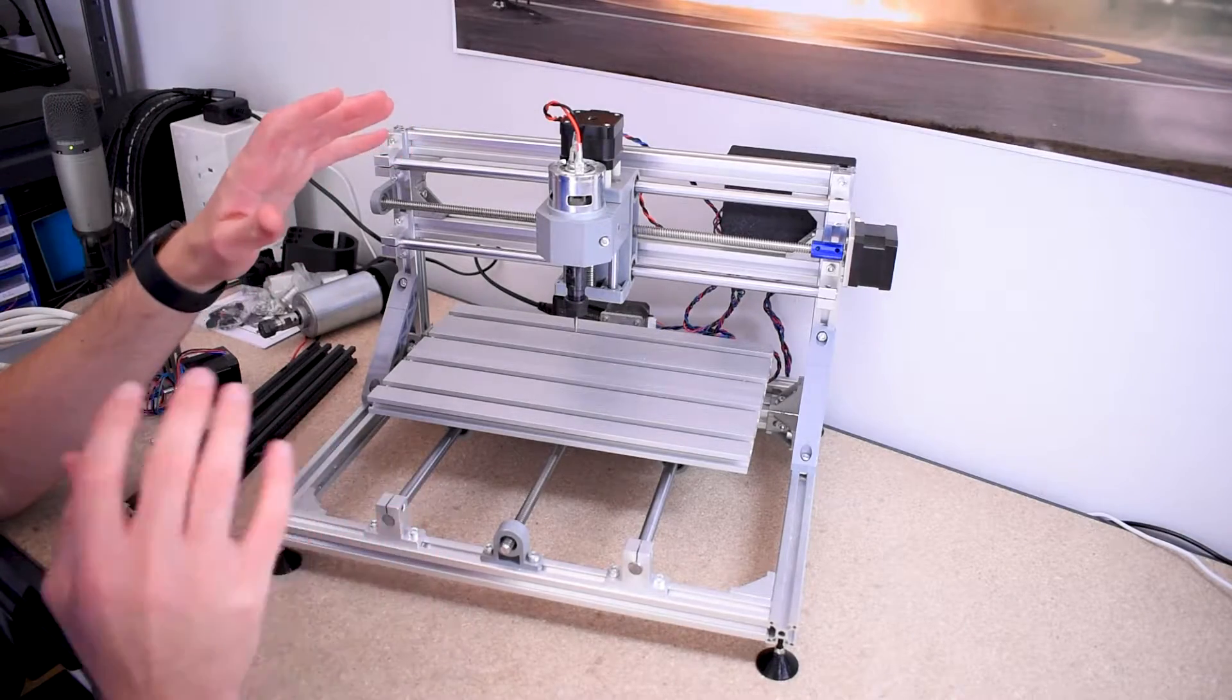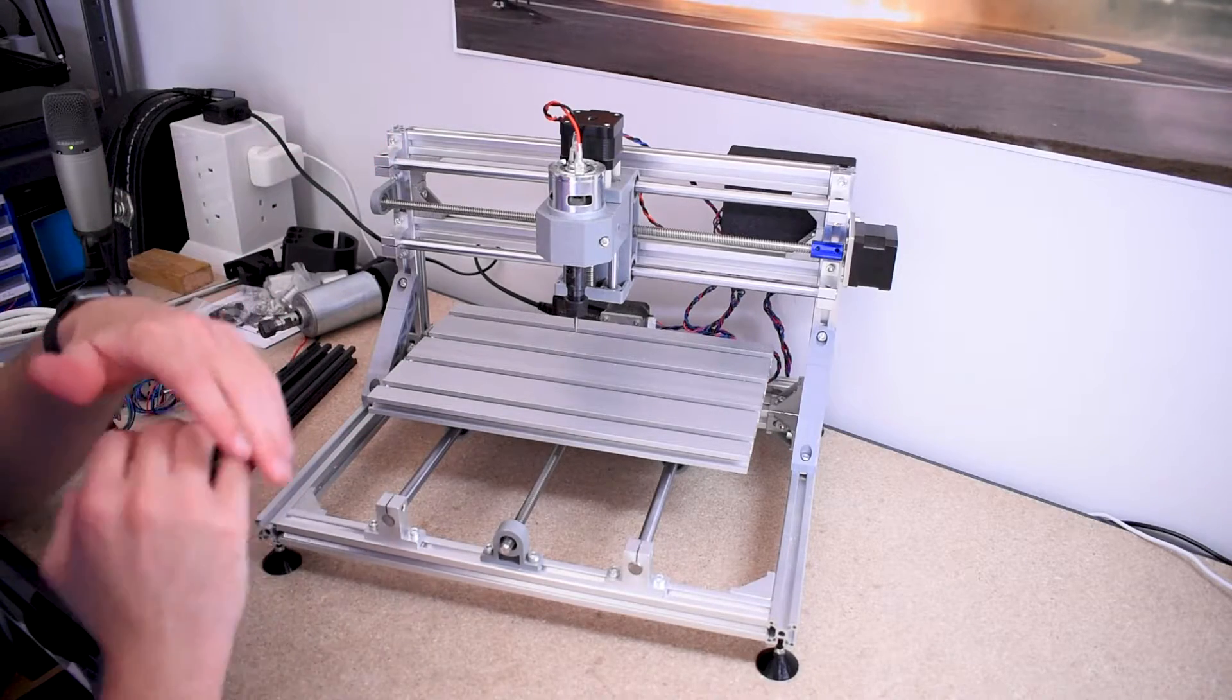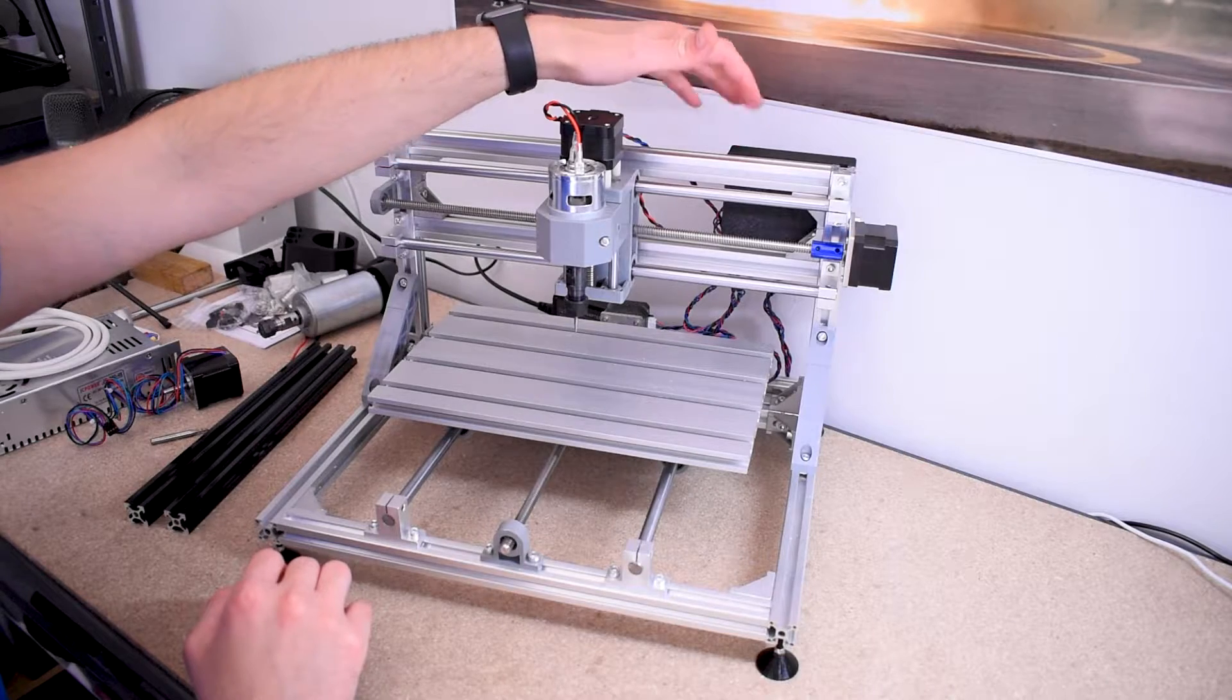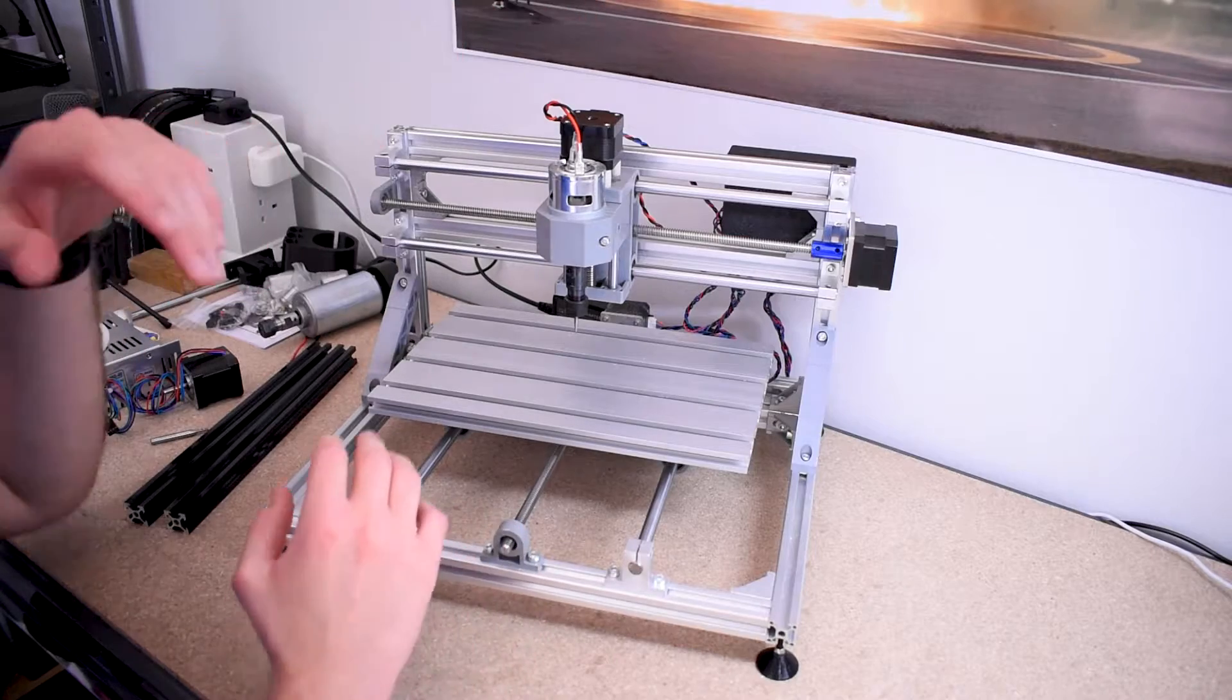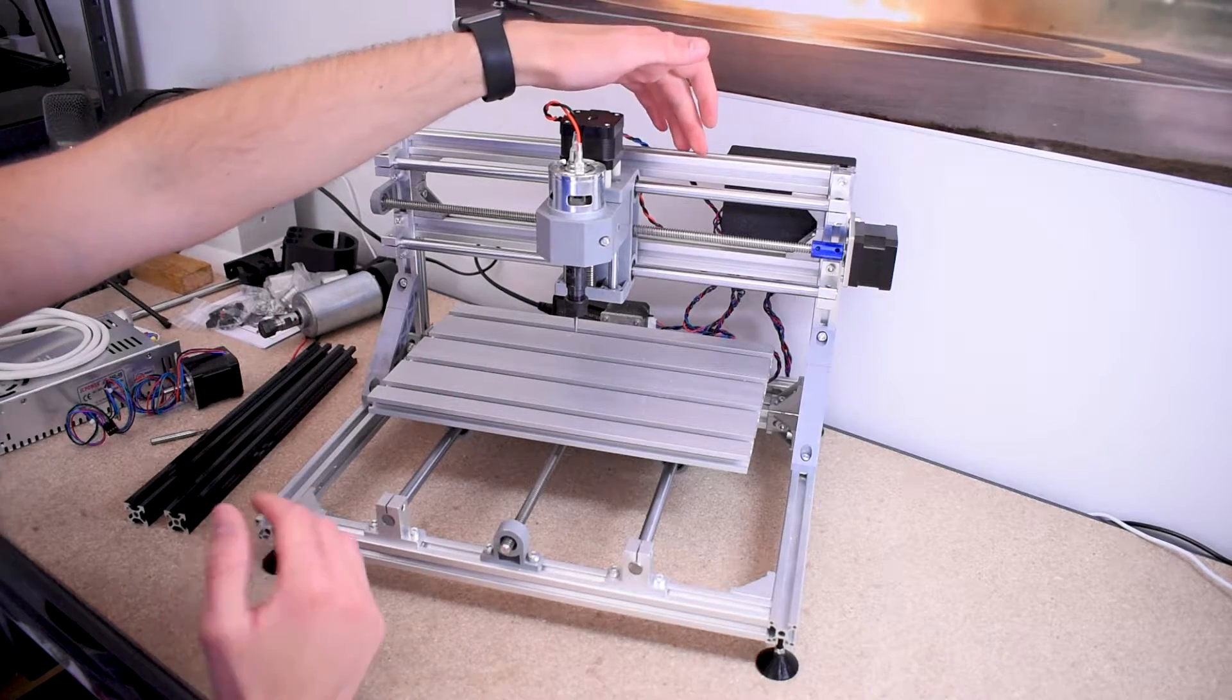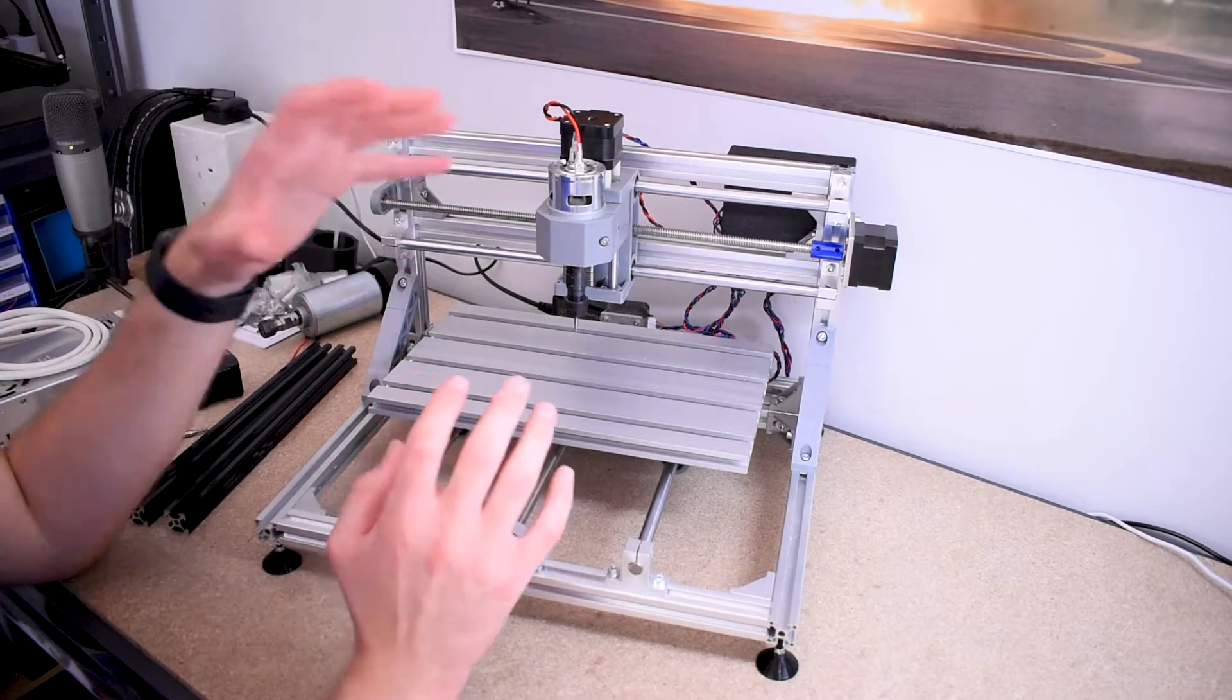All right, so this is a completely stock 3018 CNC router. Now there's no upgrades on this whatsoever. The only thing I've added here at the back is a case for the board. Now the board comes with these standoffs as stock and they're really sketchy if you ask me, especially considering the frame is made completely of aluminum and you don't want to take any risks there shorting out the board.